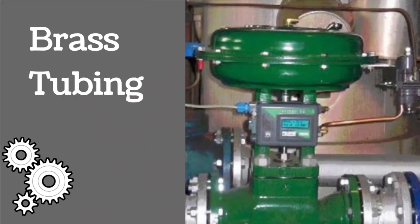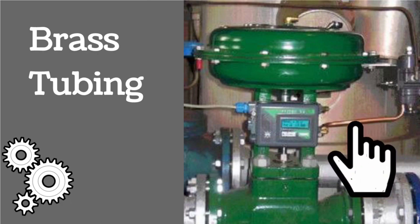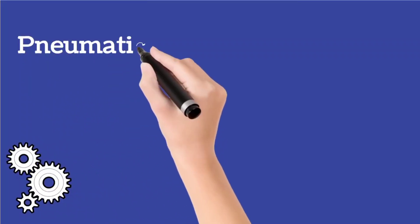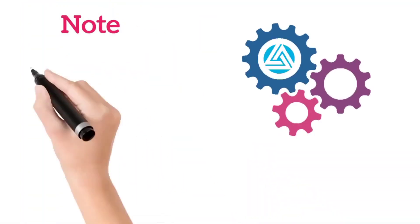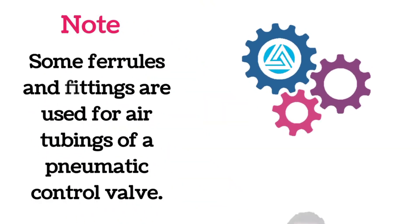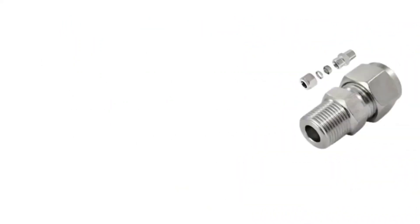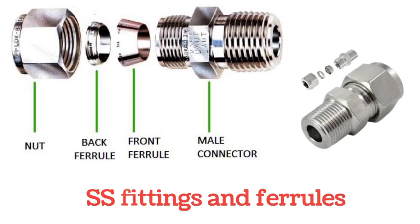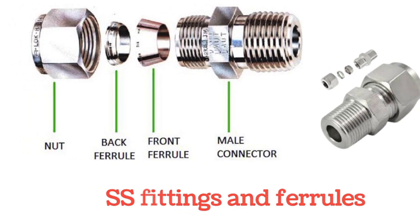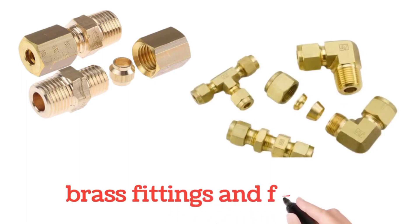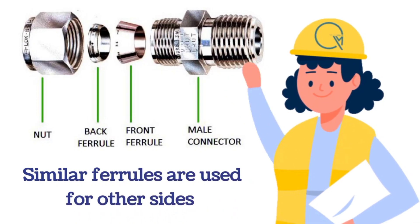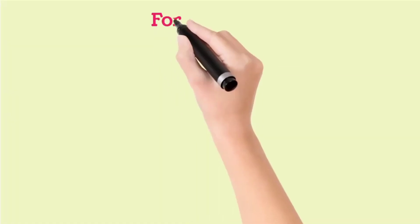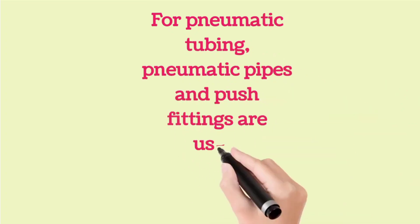The third type of tubing is pneumatic tubing, shown by the arrow. Note that some ferrules and fittings are used for air tubing of a pneumatic control valve. SS ferrules and fittings are shown in the images, along with various parts of the fitting and ferrule. Brass ferrules and fittings are also shown. An important point: similar ferrules are used for both sides of the connector. For pneumatic tubing, pneumatic pipes and push fittings are used, as shown in the images.